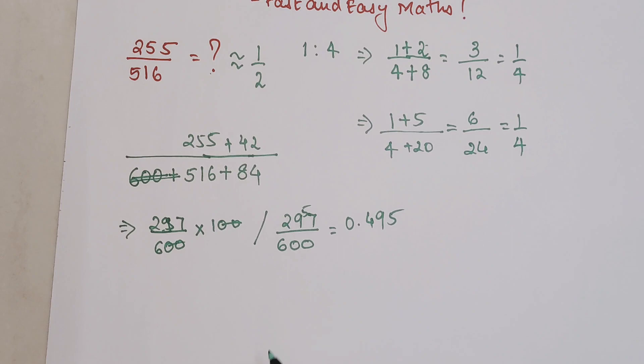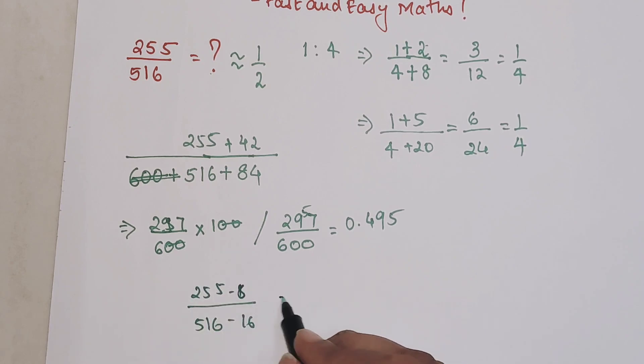Very quickly, let's see if I had to make it 500. If I had to make it 500, then basically I am subtracting by 16, so 255 I am also subtracting by 8, so I am getting 247/500.